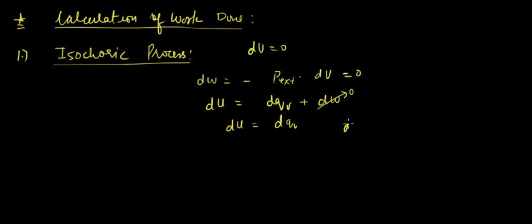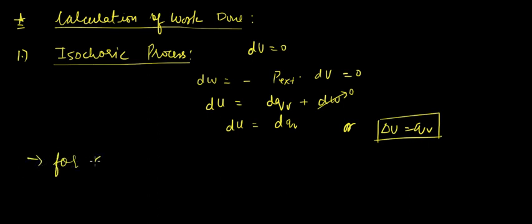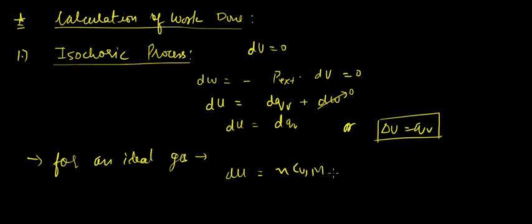So we can write du equals dQ_V. In other words, we can write that ΔU equals Q_V. For an ideal gas, we can write du equals nC_Vm dT, so nC_Vm dT equals dQ_V.